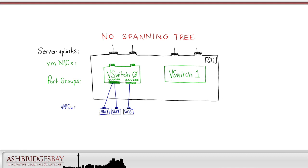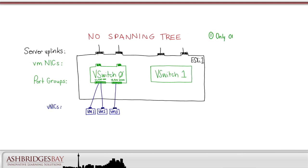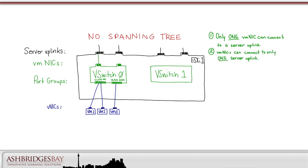Let's look at vSwitch characteristics and operations that prevent loops. Only one VMNIC can connect to any server uplink — connecting multiple VMNICs to the same uplink is not allowed. A VMNIC can be connected to only one server uplink — connecting it to multiple uplinks is not allowed. If we connect each of the vSwitch0 VMNICs to its own server uplink, we have a good configuration. vSwitches cannot be connected together — that is also not allowed.